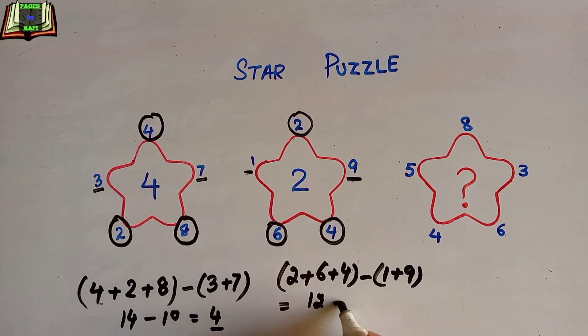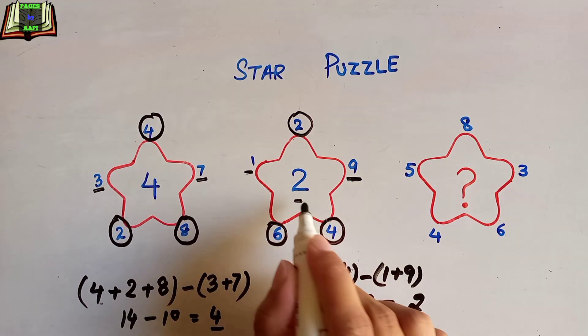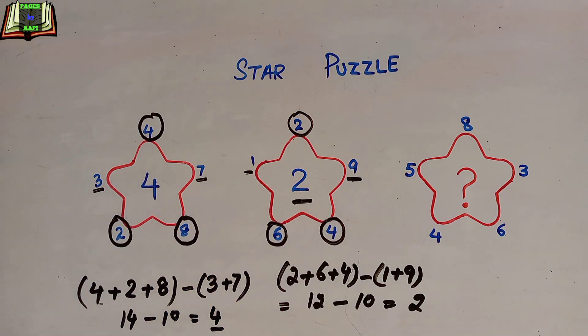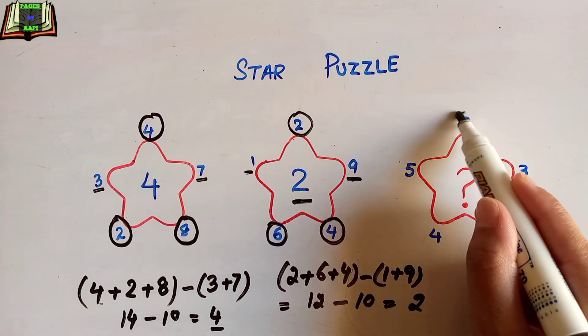So it means this is the pattern of how the middle numbers are placed. Now we are going to solve the unknown number. We will take these three numbers: 8, 4, and 6.